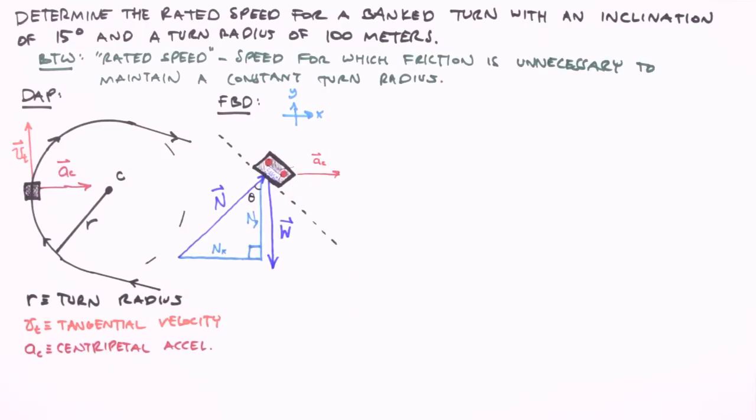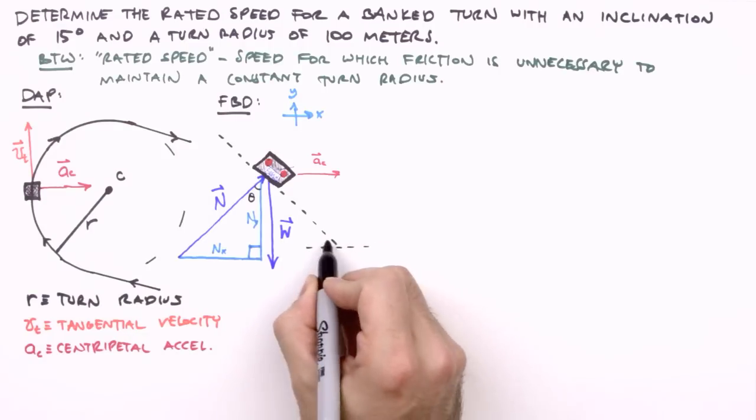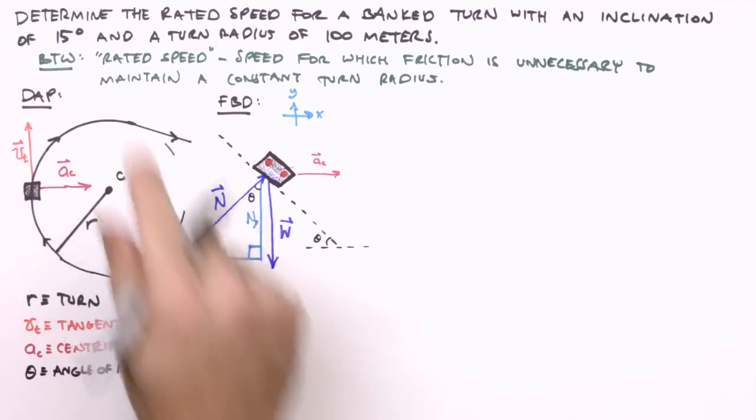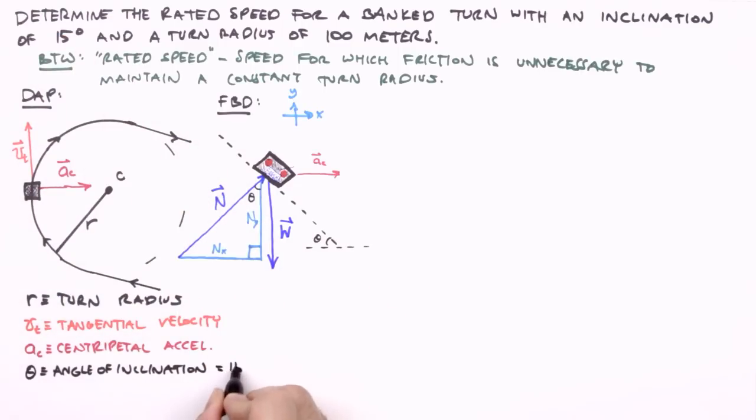We'll call this angle theta. And it turns out that the angle between the normal force and the weight vectors is equal to the angle of the incline. So we'll label this theta as well. So theta is defined as the angle of inclination, which is a known value. So we write equals 15 degrees.